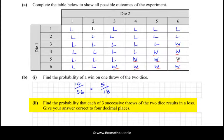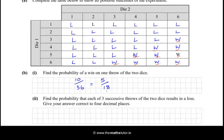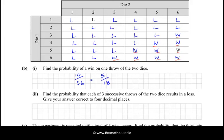Find the probability that each of 3 successive throws of the two dice results in a loss. Give your answer correct to 4 decimal places. So we want a loss followed by a loss followed by another loss. And when they're followed by we can use the AND rule which is multiply. So the probability of a loss is 1 minus 5 over 18 so that'll be 13 over 18.